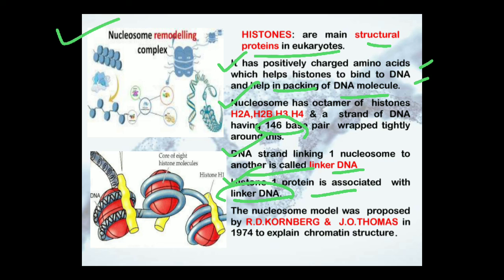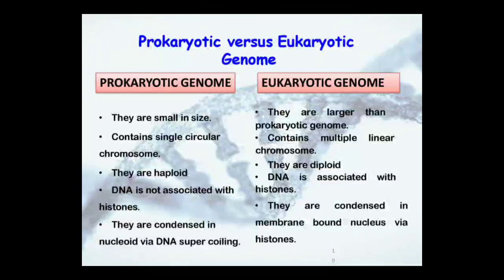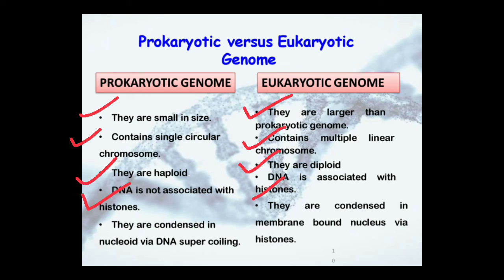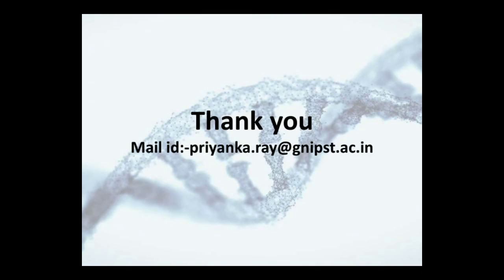Here I have given you a comparative analysis of prokaryotic and eukaryotic genomes. The prokaryotic genome is small in size, whereas the eukaryotic genome is larger. Prokaryotes contain a single circular chromosome; eukaryotes contain multiple linear chromosomes. Prokaryotes are haploid; eukaryotes are diploid. DNA is not associated with histones in prokaryotes, whereas in eukaryotes DNA is associated with histones. Prokaryotic DNA is condensed in the nucleoid via DNA supercoiling, whereas eukaryotic DNA is condensed in a membrane-bound nucleus via histones. I hope the concept of the genetic material of prokaryotic and eukaryotic cells is now clear to you.